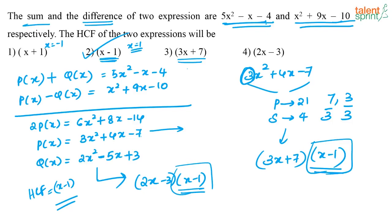The common factor in both cases is x minus 1, so the correct answer is option 2. Both methods are clear — we found both expressions, wrote them in terms of factors, and found the HCF. The other way is to check with the options. Importantly, the HCF of two expressions is also a factor of their sum and difference, so you can check options directly against the given sum and difference expressions. Make sure you check for both expressions — don't stop with just one.